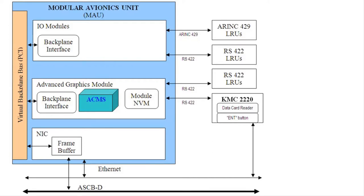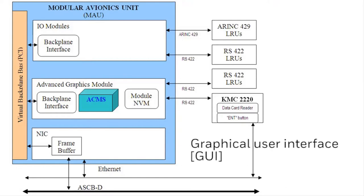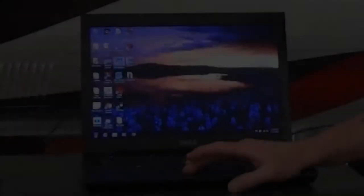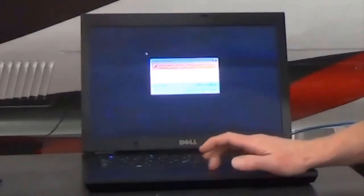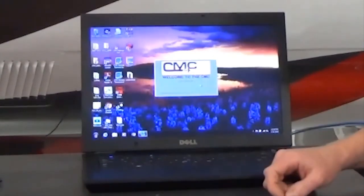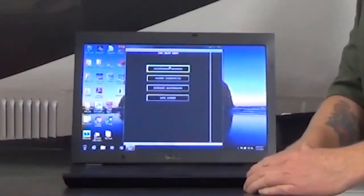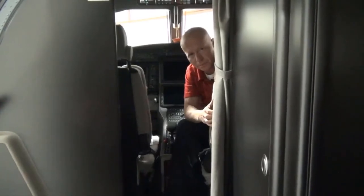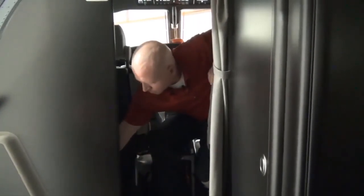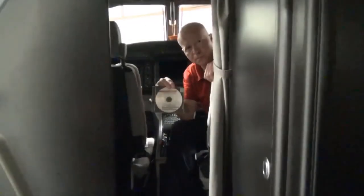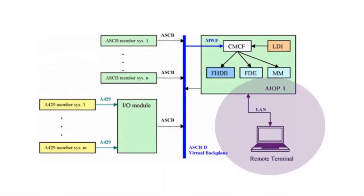And finally, the remote terminal data loading software, which is the graphical user interface (GUI) that can control the CMCF and is hosted on your maintenance laptop. The remote terminal software provides the central maintenance function display and is intended to provide the CMF display for the remote terminal platform. It is located on the Tools CD-ROM, which is supplied with every new aircraft and when the software version is changed.